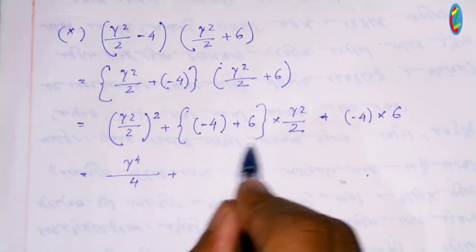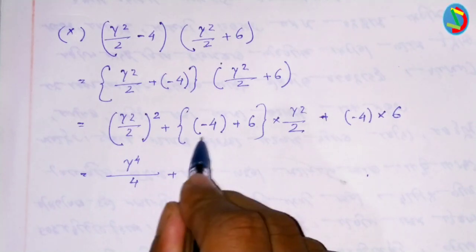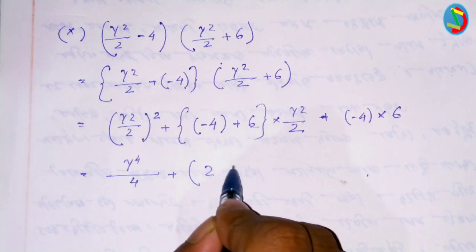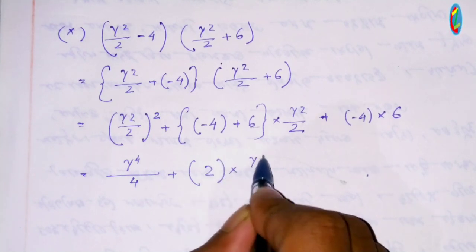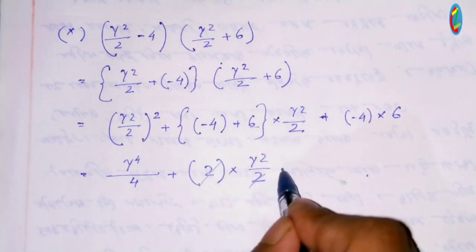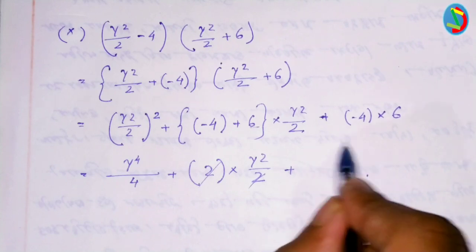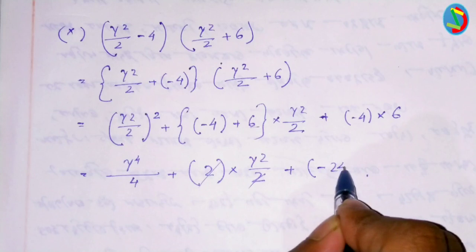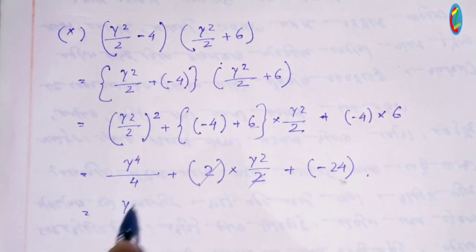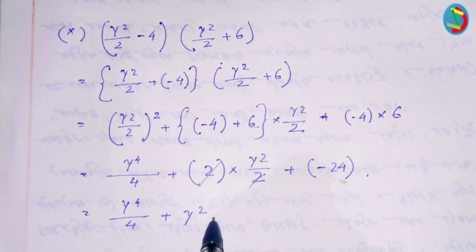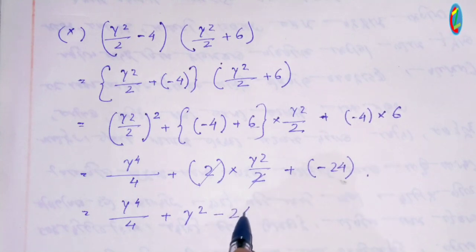You can have the right 2 for each other, now twice. This will be 2 to 2. This is minus 24, here is y divided by four plus y squared, and here is minus 24.